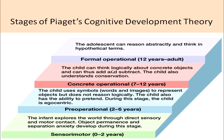In the sensory motor stage, birth to two years, the infant learns about the environment through motor and sensory abilities — sense of touch, hearing, tasting, smelling — and motor activities as the child grows older. In the pre-operational stage, the child uses symbols to represent objects but does not reason logically. The child also has the ability to pretend, and during this stage the child is also egocentric.